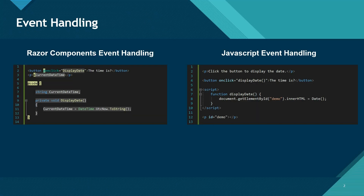Let's first talk about how event handling is done in JavaScript versus Razor components. I want to show the current date and time on a button click. If I want to do that using JavaScript, I add an HTML button control and then call a JavaScript function on the click event.